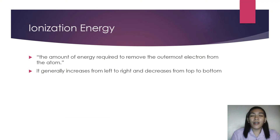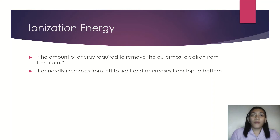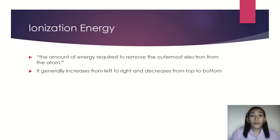Next, we have ionization energy. Ionization energy refers to the amount of energy required to remove the outermost electron from the atom. This ionization energy is necessary for the bonding of electrons. The more tightly bound an electron is to the nucleus — the closer it is — the more difficult its removal, and therefore it requires a higher amount of ionization energy.